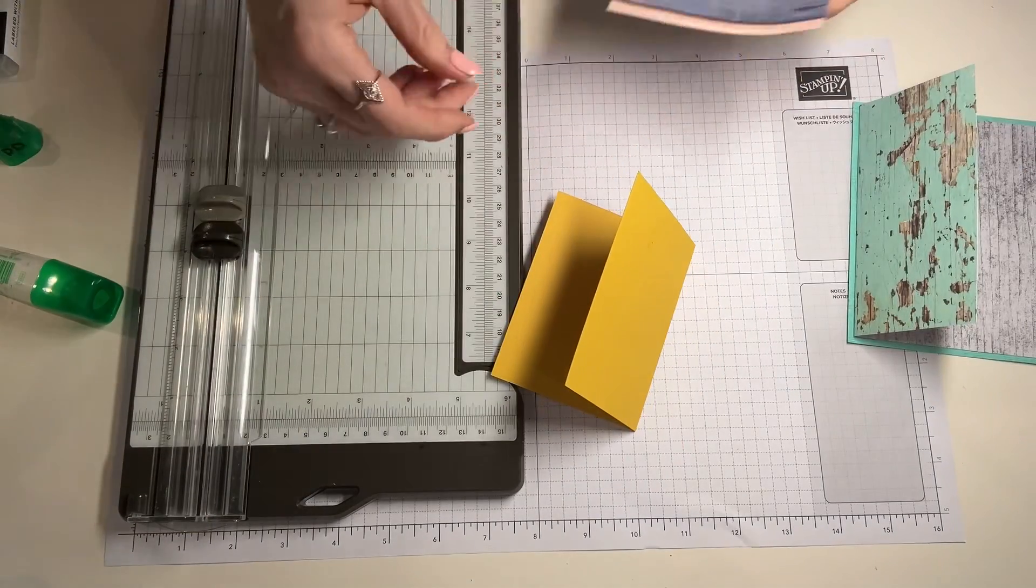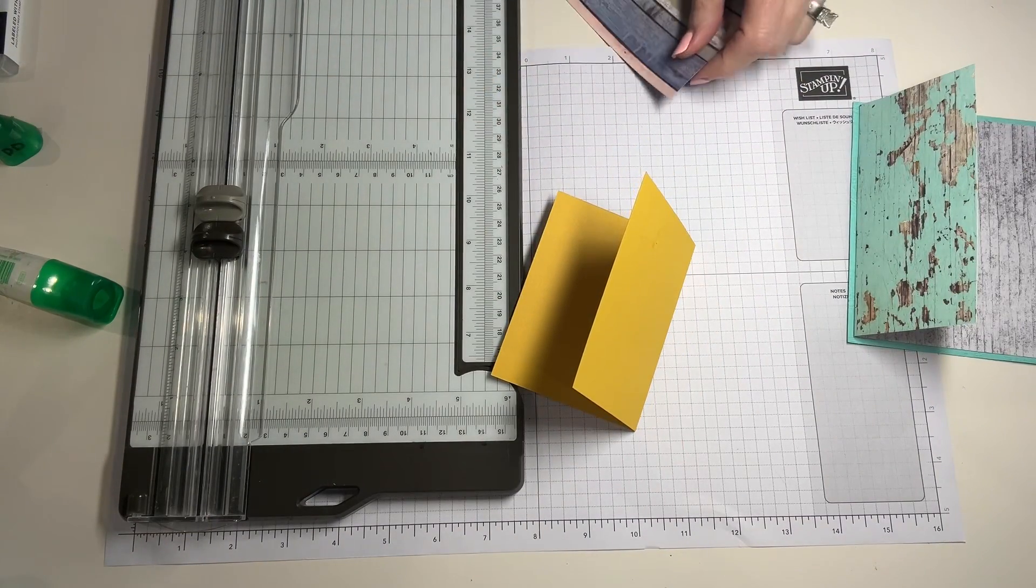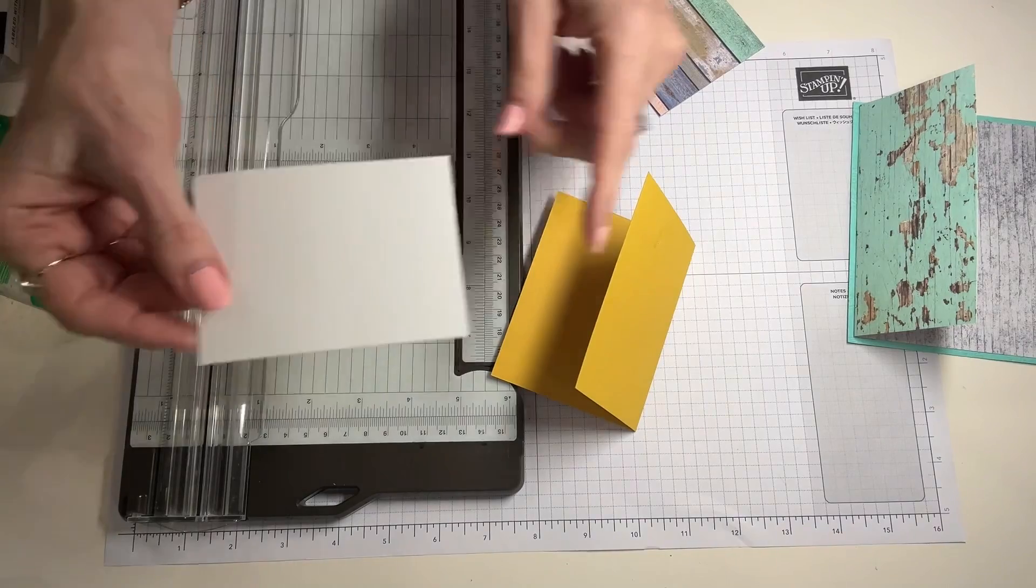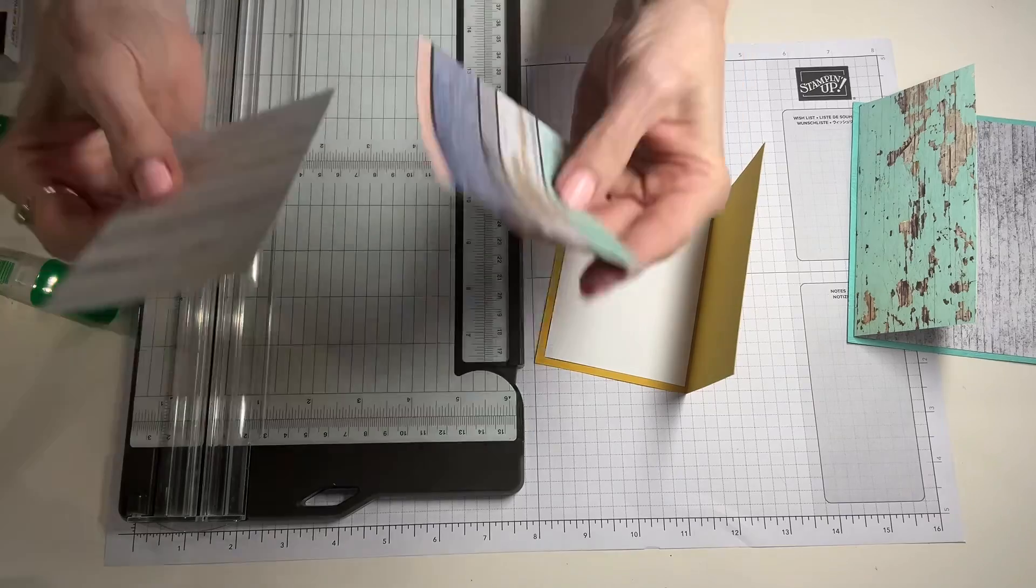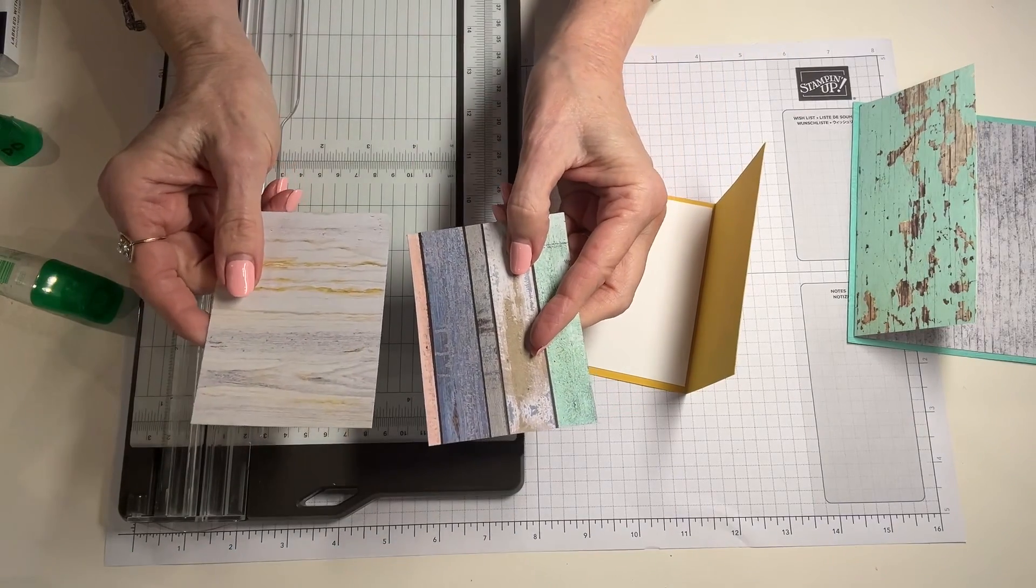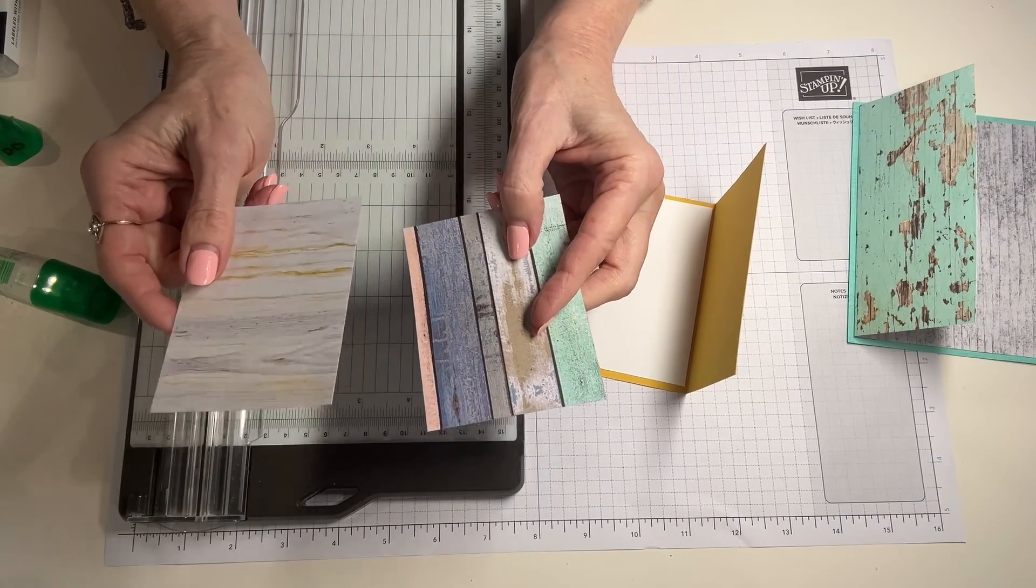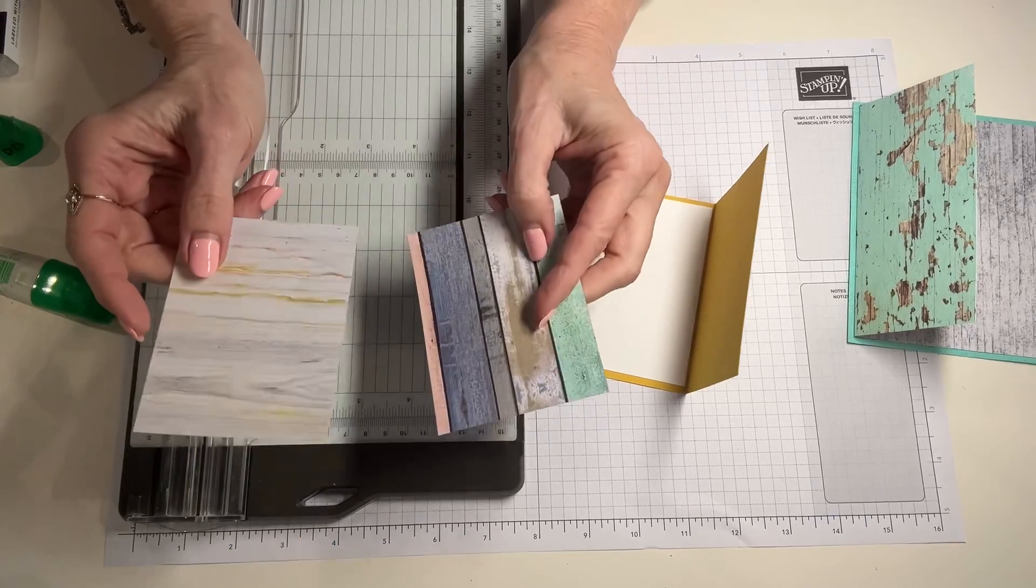So then you're going to fold it in half or score it at three and one quarters. Then to go along with this, you're going to need a white layer at four and a quarter by three. This is going to be for the inside of, let's call it a mini card. Then you're going to need to cut two pieces of new patterned designer series paper and these are going to be, both of them, four and one quarter by three.